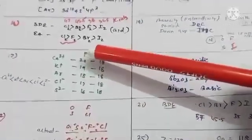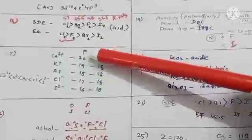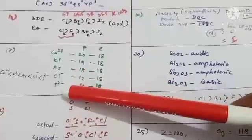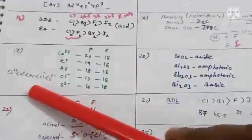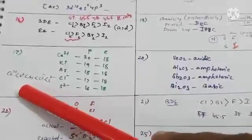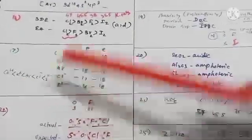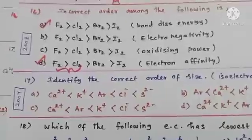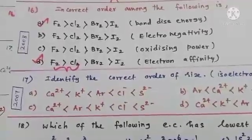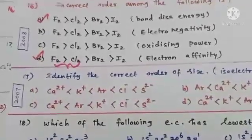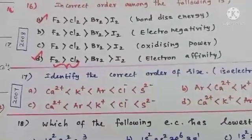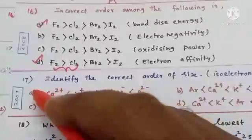The increasing order of size is: Ca²⁺ < K⁺ < Ar < Cl⁻ < S²⁻. S²⁻ is the largest among these. Looking at the options, option A gives Ca²⁺ first, followed by K⁺, then Ar, then Cl⁻, and finally S²⁻ as the largest. So option A is the correct answer.